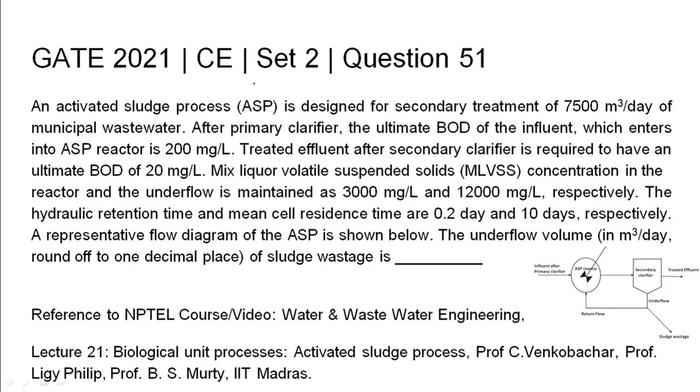GATE 2021 civil engineering set 2 question 51. An activated sludge process is designed for secondary treatment of 7500 meter cube per day of municipal wastewater. After primary clarifier, the ultimate BOD of the influent which enters into ASP reactor is 200 mg per liter. Treated effluent after secondary clarifier is required to have an ultimate BOD of 20 mg per liter.